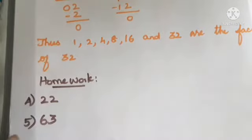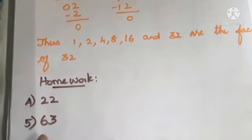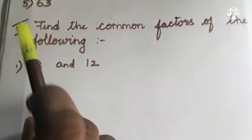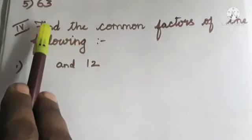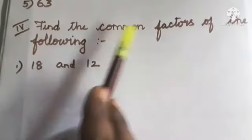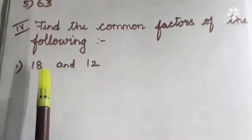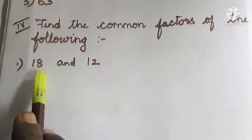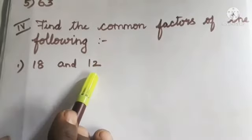Using this division method, complete homework questions 4 and 5: find the factors of 22 and find the factors of 63. Next, Roman numeral 4: find the common factors of the following. Here we find the factors of each given number and then identify the common ones. First question: find the common factors of 18 and 12.